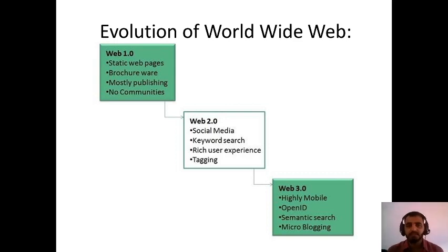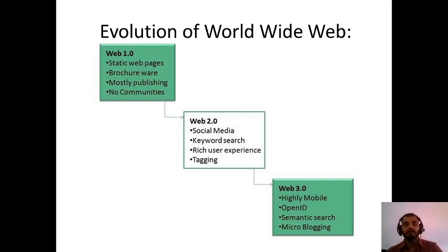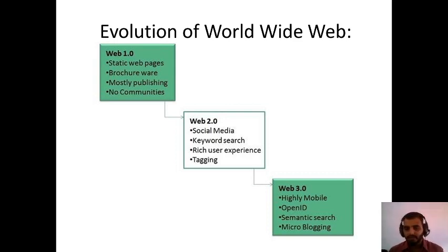In Web 1.0, static web pages were there, browser-based with mostly publishing and no interaction or communities. The disadvantages of Web 1.0 were turned into advantages in Web 2.0, where social media was introduced for dynamic interaction, keyword searches were added to find specific information, rich user experiences and tagging were included. And with Web 3.0, highly mobile-oriented websites were developed.